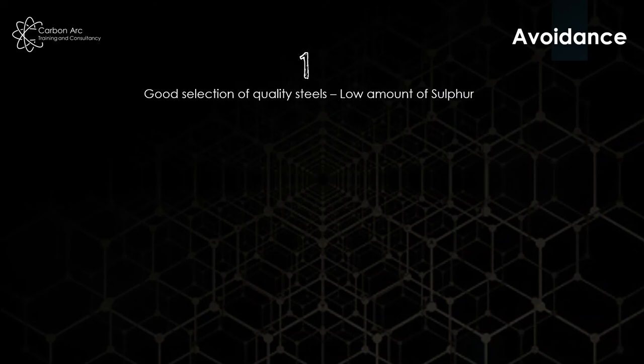So our avoidance is the first one, absolutely, is to just get good quality steel that has zero laminations in. If we have to have laminations, then we want to avoid restraint. So we want to reduce the amount of hold back that one side of the joint is going to have and let it move. But of course, that might lead to more distortion, which is always the most likely thing we're going to want.